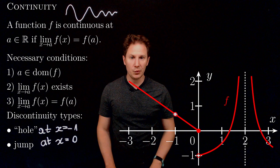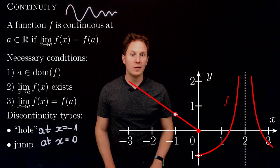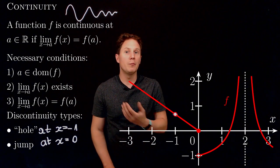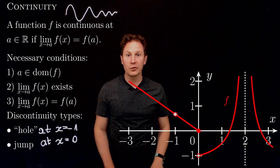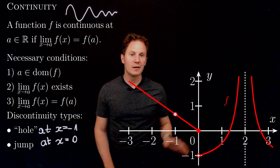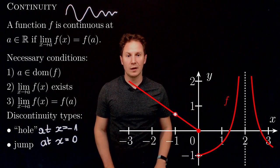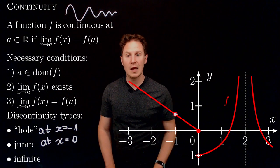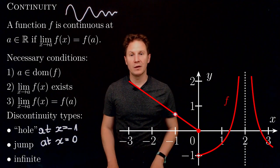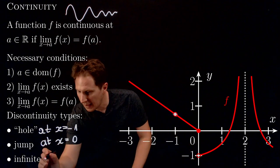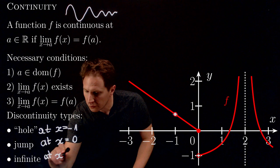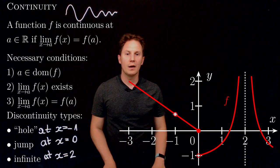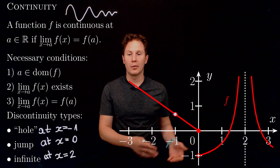Finally, at x equals two we also see some weird behavior — the function is not defined there, so by condition one breaking down it is discontinuous at x equals two. But it is an important and interesting enough behavior that we give it its own name: it's an infinite discontinuity, for obvious reasons. At x equals two, the graph of the function blows up.